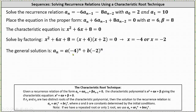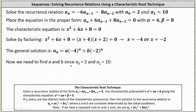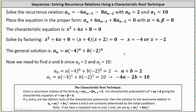The next step is to determine the values of a and b using the initial conditions a sub zero equals two and a sub one equals ten. To determine a sub zero, n is equal to zero, so a sub zero equals a times negative four to the zero power plus b times negative two to the zero power, which must equal two.